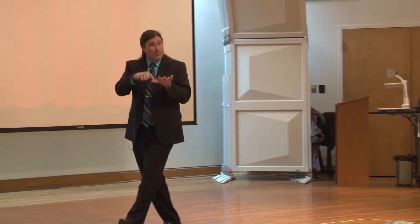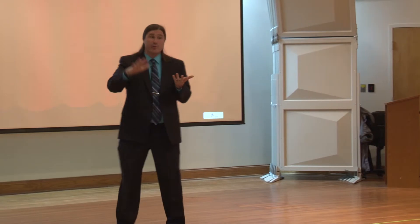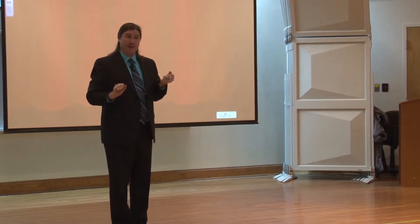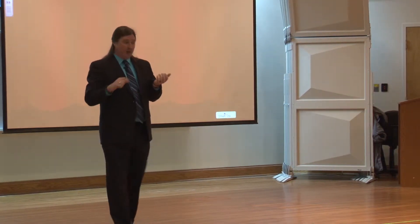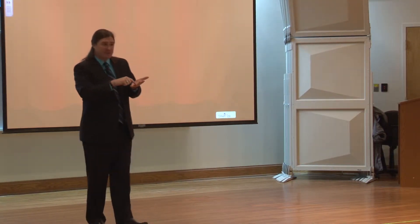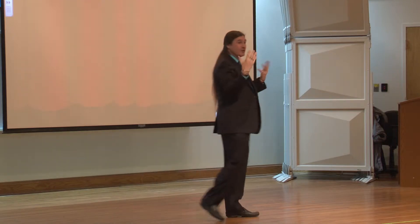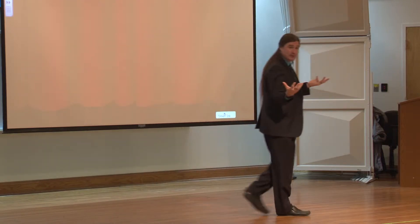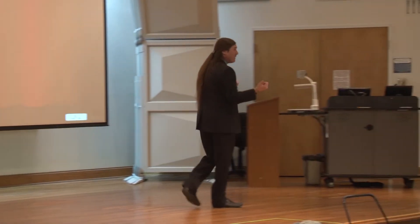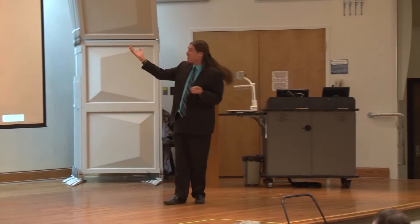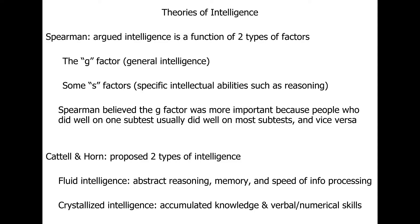If they tended to do poorly on one, they tended to do more poorly on others, which would indicate lower levels of ability. So what he said is all these individual tests are specific applications of your general intellectual ability — where he came up with the notion of G, the G factor, as your general intelligence factor.